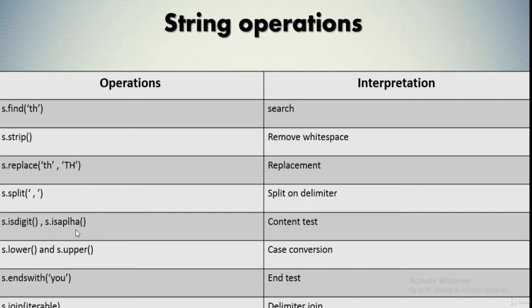Next we have isdigit and isalpha operations. isdigit finds out whether your sequence contains digits, while isalpha checks whether it contains alphabets. Then we have lower and upper for case conversion — s.lower converts your string to lower case and s.upper converts it to upper case. Next is endswith, which checks whether your string ends with a given parameter, returning true or false. Finally, we have join — you pass an iterable variable into the join function and it joins each element with the delimiter string you specify.